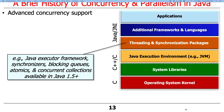They also added support for blocking queues — a queue where if you try to remove something and it's empty, you block until it's not empty; and if you try to put something in and it's full, you block until it's not full. They added atomics — things where you can do atomic operations, like atomically incrementing a variable by one or checking if something is true or false. And they added concurrent collections, things like ConcurrentHashMap.